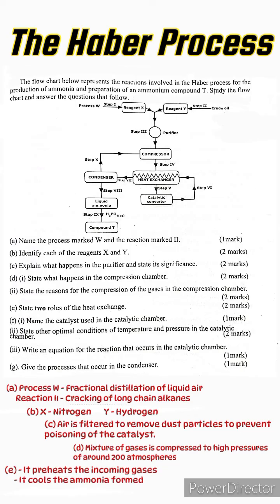Part f: Name the catalyst used in the catalytic chamber. This of course is finely divided iron. Roman two: State other optimal conditions of temperature and pressure in the catalytic chamber. In terms of temperature, the range is around 450 to 500, but just choose 450 degrees Celsius and you'll be set. In terms of pressure, it's 200 atmospheres.